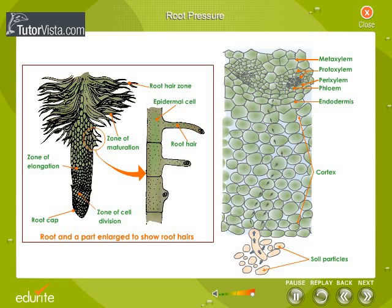Water is forced into the xylem vessels through the passage cells of the endodermis and through the unthickened areas and pits that the vessels are provided with. Besides, the lignified walls of the vessels are also permeable to water pressure.